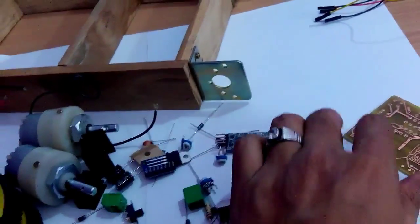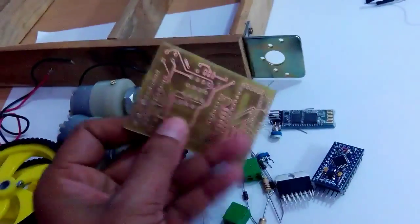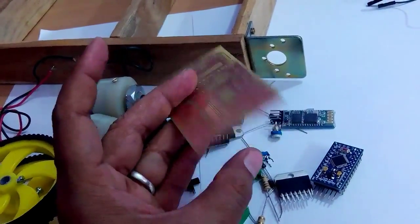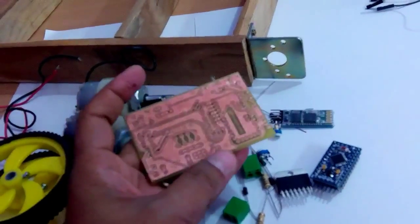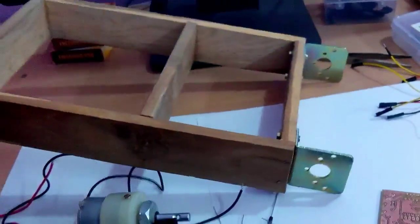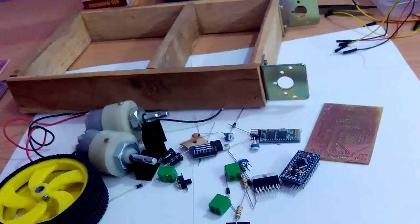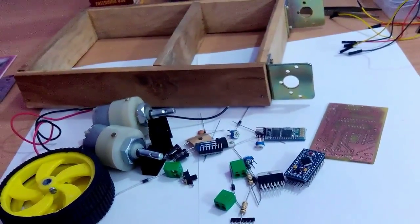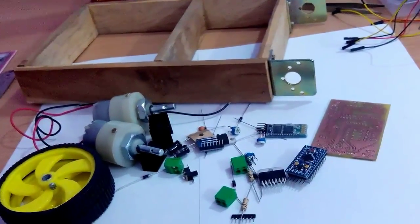We will put all these things on this single board and on this single board we are interested to make a balancing robot using a single board. These are the wheels and this is a frame structure made by using wooden blocks. Let's see how it works, we will assemble these all things and then we will program our Arduino, then let's see how it works.